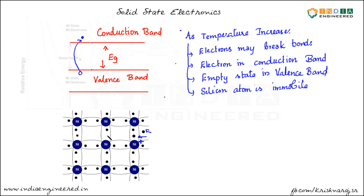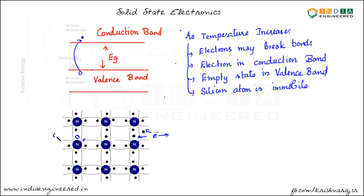Now here we have a vacant state. The silicon atom's positive charge is gone, and this silicon atom will gain the positive charge. Now this electron may move to this location — this can randomly happen throughout the crystal. So let's say this electron moved to this location. Now we have a hole in this location. This movement of electron in one direction — the electron movement in the bonds — can be considered as the movement of a hole in the opposite direction. It is easier to consider this movement as the movement of positive charges in this direction instead of actual electron motion in the valence band.